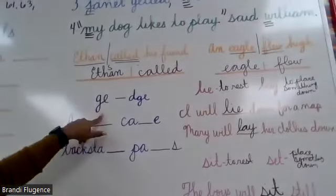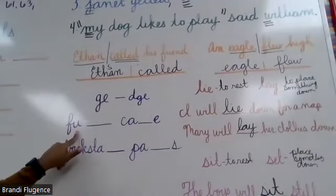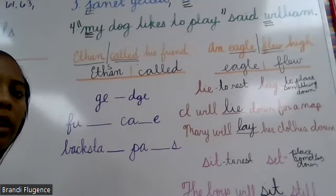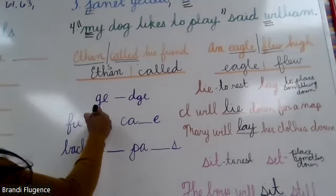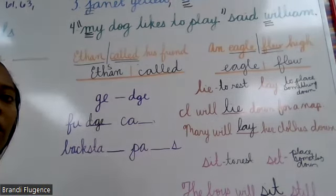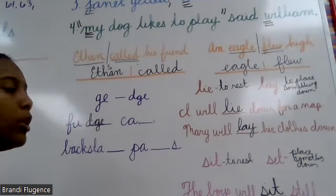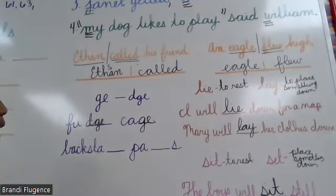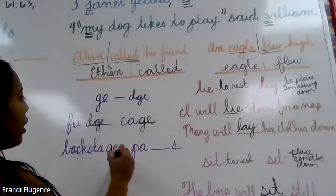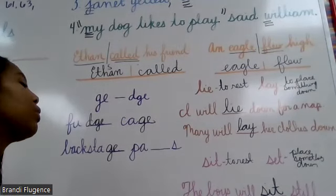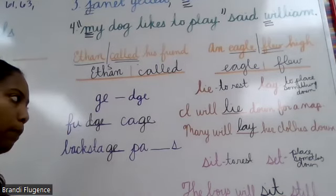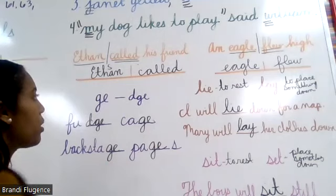Last thing — we're going to put either G-E or D-G-E. We have 'fudge' — D-G-E. Next: 'cage' — G-E. 'Backstage' — G-E. And 'pages' — G-E. Pages, awesome.